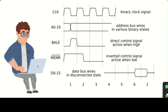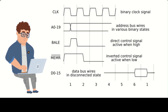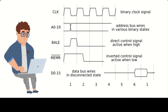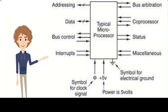Some signals carried by the control bus include: First, the clock signal, which is used to synchronize the timing of different components of the system. The clock signal is generated by a clock generator and is sent to all components via the control bus. Second, the interrupt signal, which is used to interrupt the normal flow of program execution and notify the CPU that a specific event has occurred — for example, when a keyboard button is pressed or when a file transfer is complete.